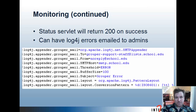The status servlet in Grouper WS will return a 200 HTTP status code on success and a 500 on failure. Generally you look for the 200 to mean success and anything else as failure. You can have log4j errors emailed to the admins in production so that you know when errors are occurring.